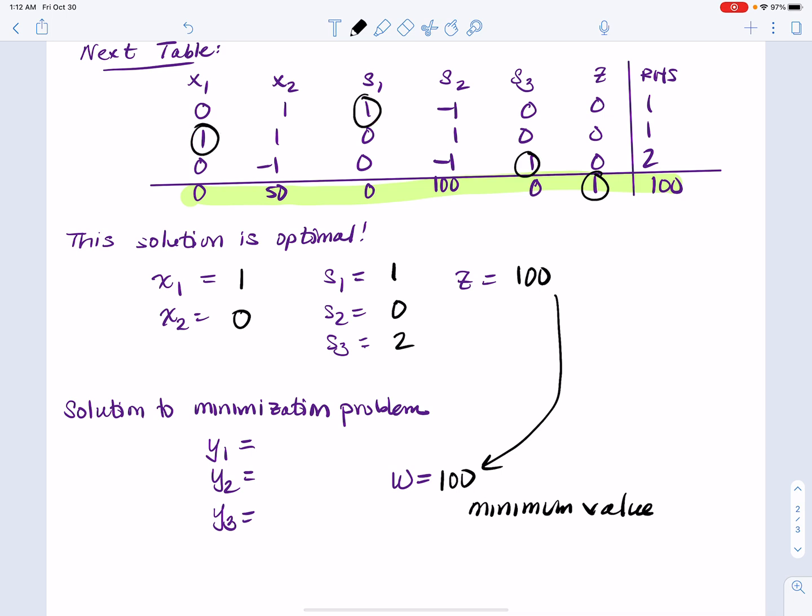we read the values of y1, y2, and y3 from this row right here. So it's actually the slack variable columns in the bottom row. So y1 corresponds to s1, so that's going to be zero. y2 corresponds to s2, which means that's going to be 100. And y3 corresponds to s3, which corresponds to zero.